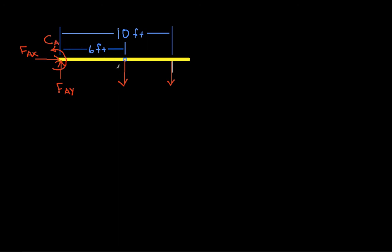We'll call this FAX and FAY, and then we'll have a couple which represents the moment generated by the weights pulling down on this arm, which I'll call CA. From the problem we know that the weight of the semaphore is 70 pounds, the weight of the arm is 150 pounds. We know distances, but we don't know FAX, FAY, or CA. We need to find those out.